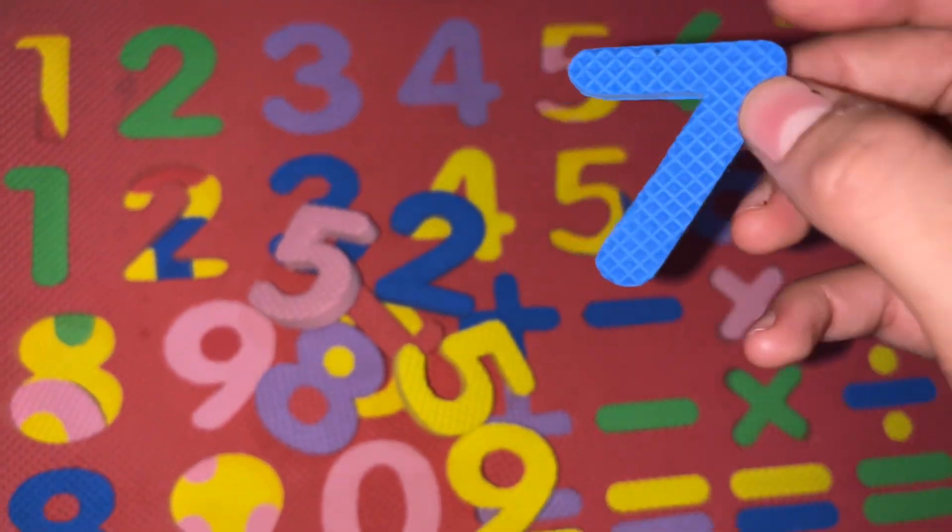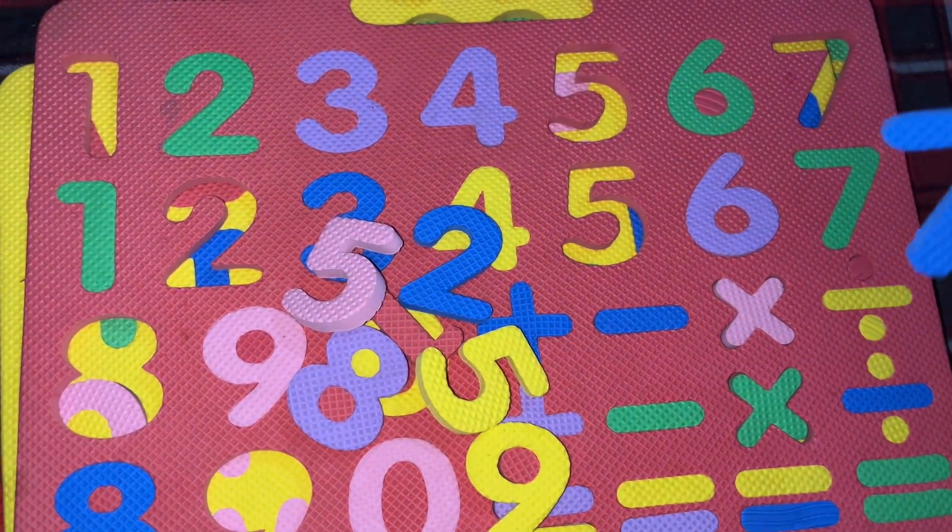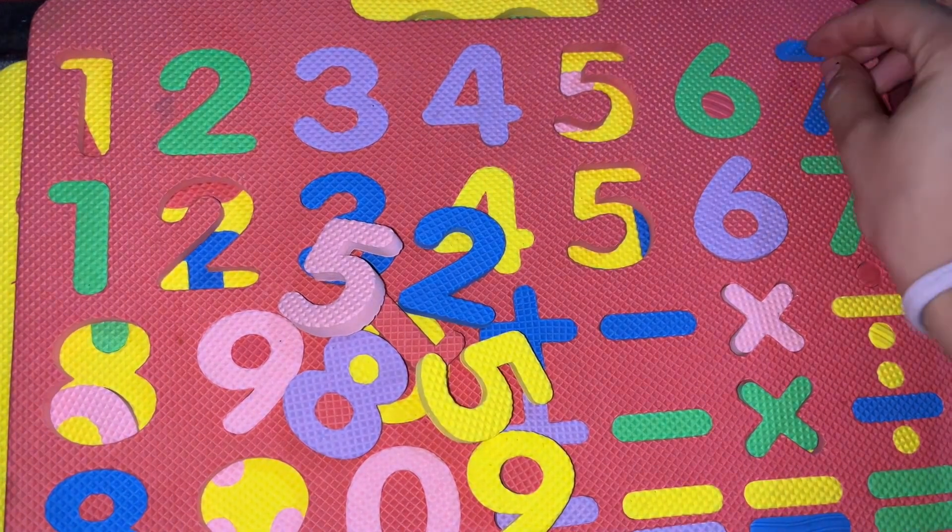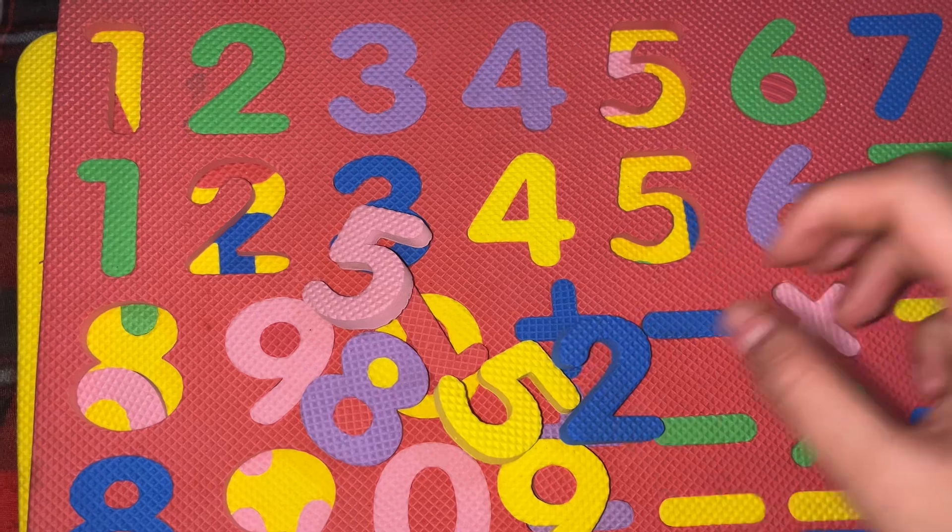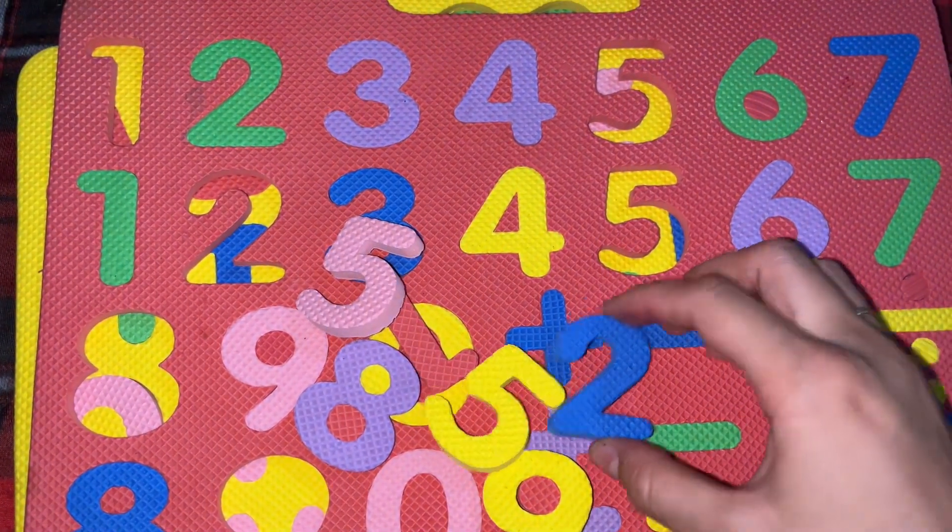Number? It's 7. S-E-V-E-N. Seven. The next number is number 2. T-W-O. Two.